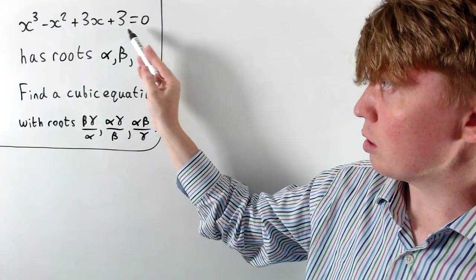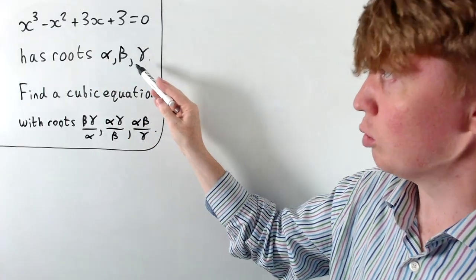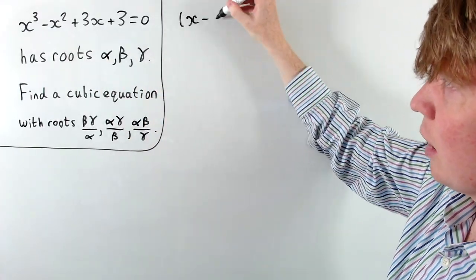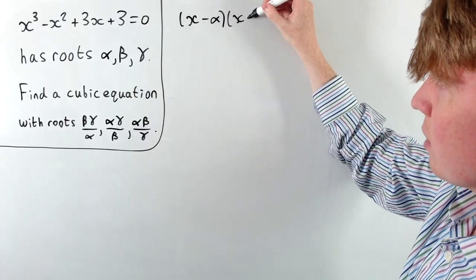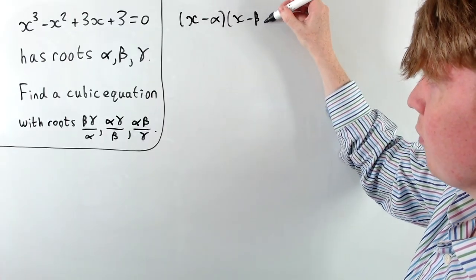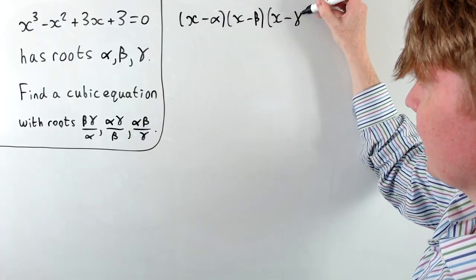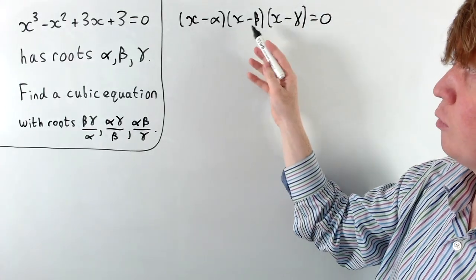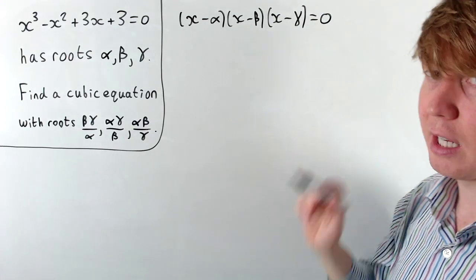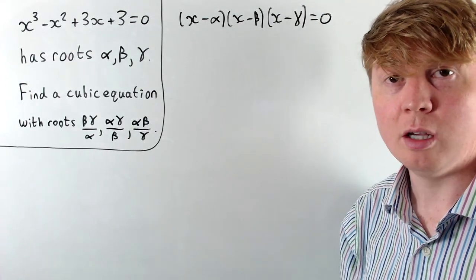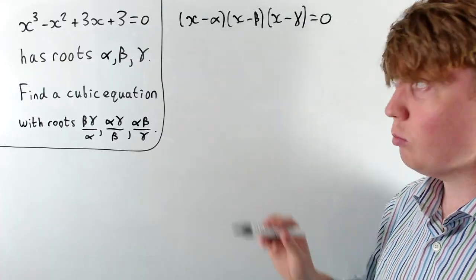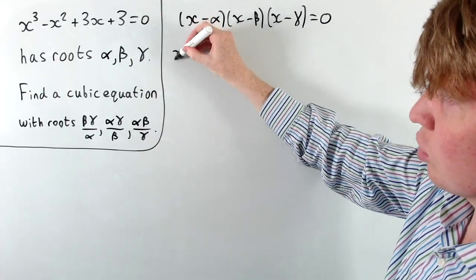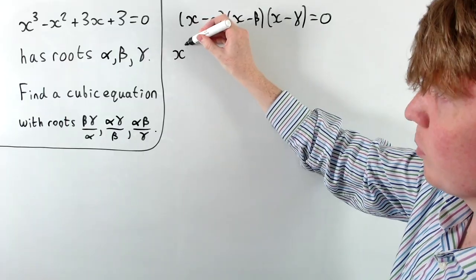If this is our original equation with roots alpha, beta, and gamma, we can equivalently write this using the factor theorem — the fact that alpha, beta, and gamma are all roots means that x minus alpha, x minus beta, and x minus gamma are all factors. When we expand these brackets we're going to get some nice identities called Vieta's formulas.